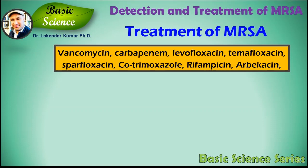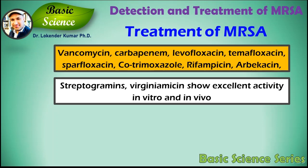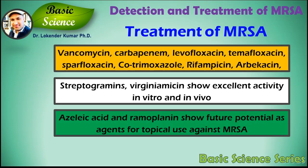After doing research on MRSA infection, effective antibiotics against MRSA infections that have shown promise both in vitro and in vivo include vancomycin, carbapenem, levofloxacin, temafloxacin, sparfloxacin, co-trimoxazole, rifampicin, arbekacin, and streptogramins. Virginiamycin shows excellent activity in vitro and in vivo against MRSA and is considered a real future potential alternative agent to vancomycin.